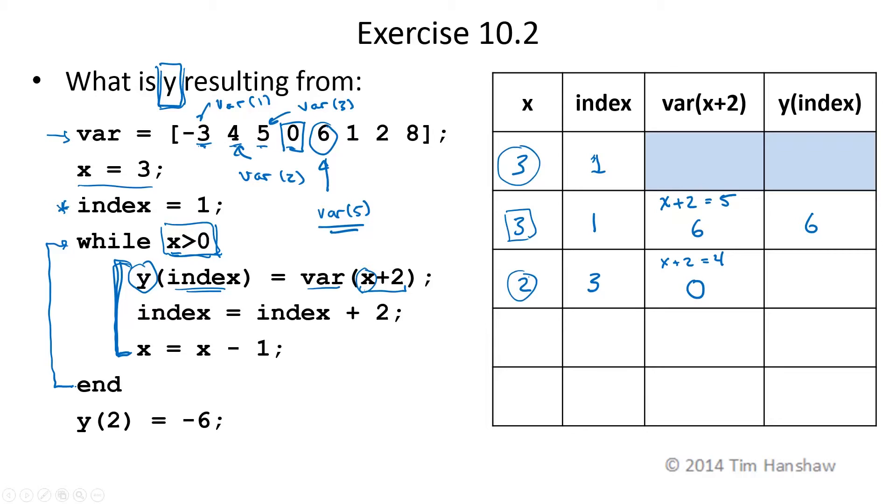We want to find var of 4, which is going to be 0. So Y of index is equal to that value, which is just 0. After that, index is equal to index plus 2. So this becomes 5. And X is equal to X minus 1. The old value of X is 2. 2 minus 1 is 1.